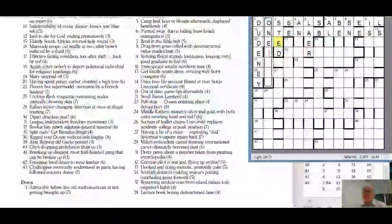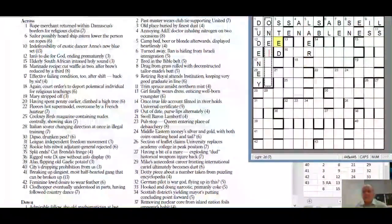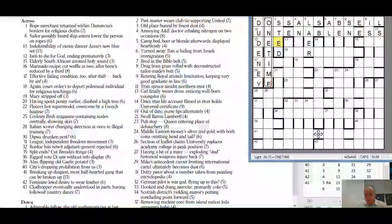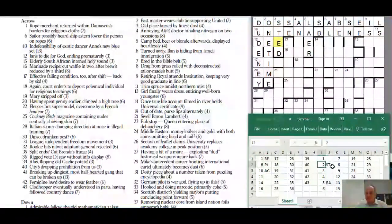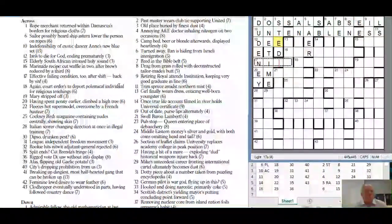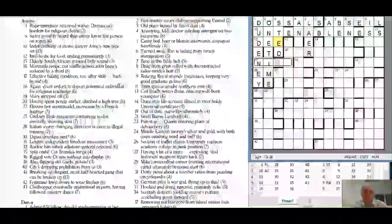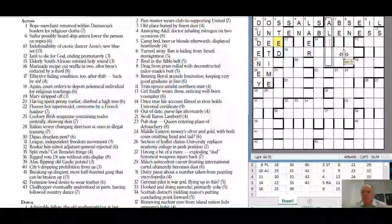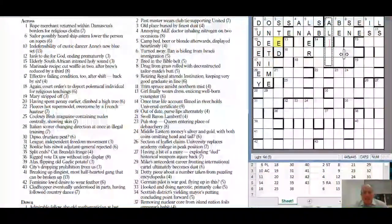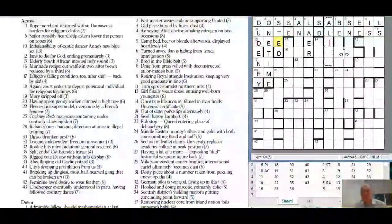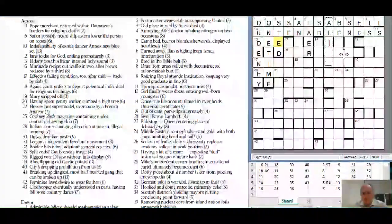Two down: past master - past could be one time, so master wearing tie supporting united, club is the extra word. The message does seem to begin REPLACE which proves I understood the instructions correctly. Six down: turned away elan is hiding from Israeli immigration.